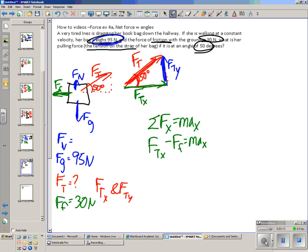Let's see, it does say that she's walking at a constant velocity, so that means the acceleration is going to be zero. So it turns out that the x component of tension is equal to friction.